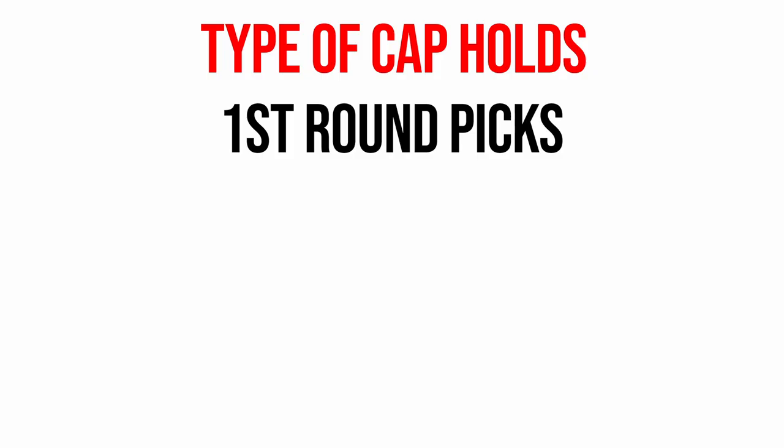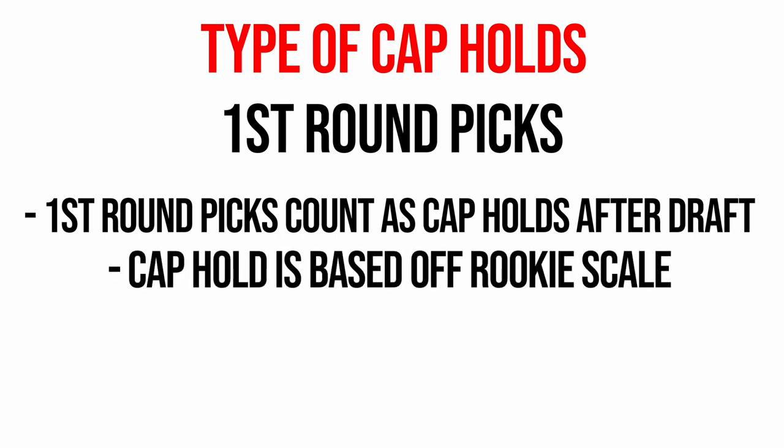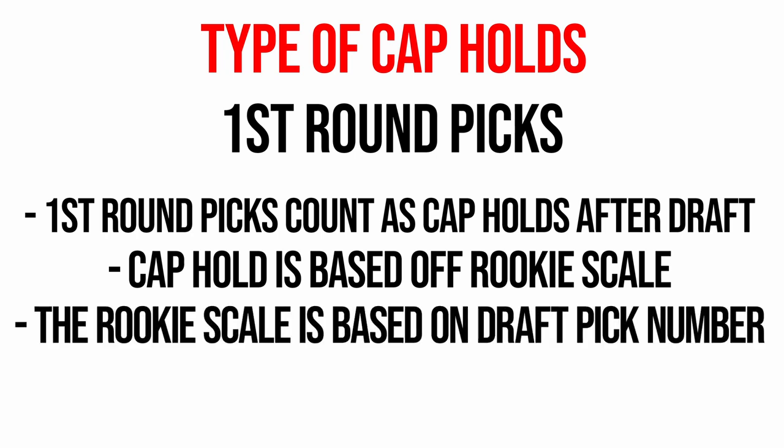The second cap hold is first round draft picks. Going into this offseason, any first round picks from the 2022 NBA Draft will count as a cap hold until they are signed. There's a rookie scale in the NBA, so all these numbers have already been determined — for example, if you have the 10th pick, it's about three million dollars. So it doesn't really matter whether they've been signed or not in terms of how much cap space you have, because it's either going to count as a contract or as a cap hold — either way it's the same amount.